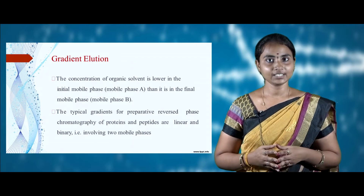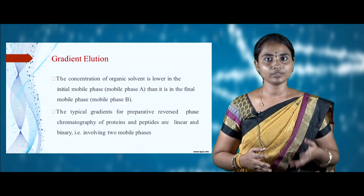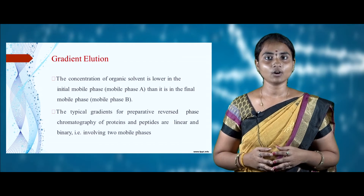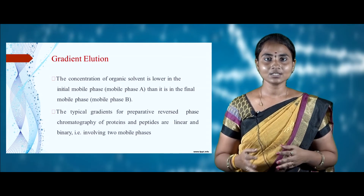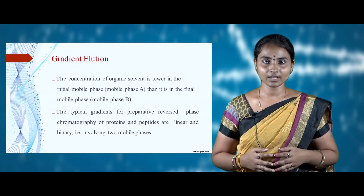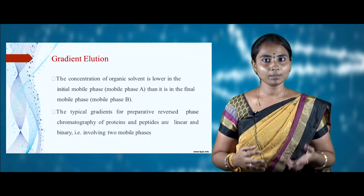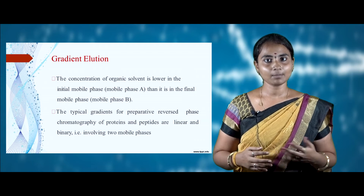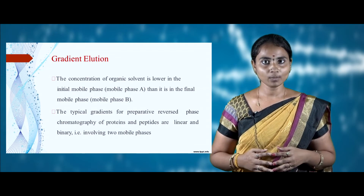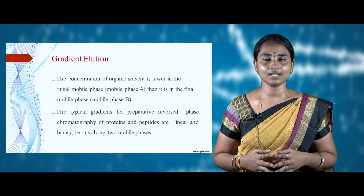After retention of peptides, proteins, and oligonucleotides, elution is performed for further purification using gradient elution. The concentration of organic solvent is lower in the initial mobile phase than in the final mobile phase used for elution. Typical gradients for preparative reverse phase chromatography of proteins and peptides are linear, or binary — meaning two mobile phases can be involved for elution of different components based on their concentration gradient.